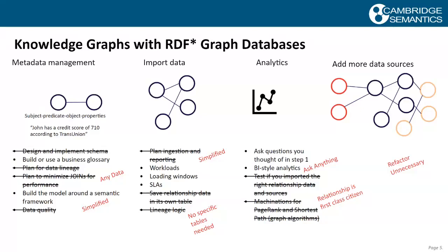We don't have to worry about designing schema or planning as much for joins or data lineage. Data quality will come as part of the process using ontologies. Importing data in triples format means no specific tables are needed and processes are simplified. When I come to analytics, I can ask anything and turn it on its head from any angle — I don't have to worry about how the data is optimized, so I don't have to refactor as much.